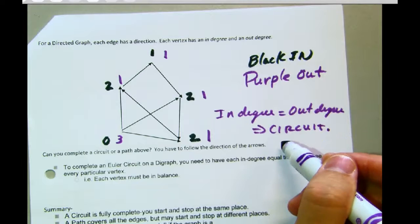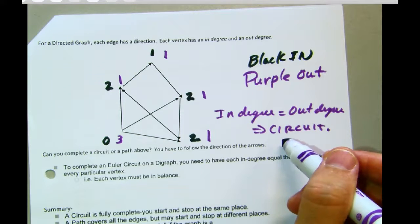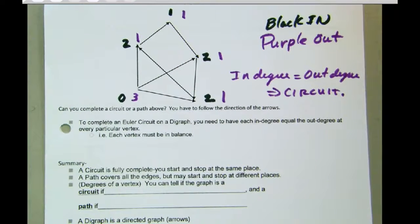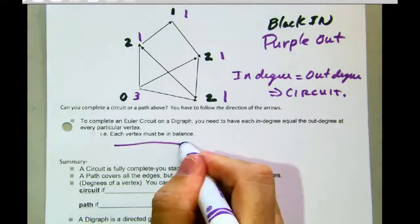And if that happens at each vertex, then we have a circuit. We can complete a circuit. And so in-degree equals the out-degree at each vertex, then we should have a circuit. Okay? In other words, each vertex must be in balance. That's the same thing.